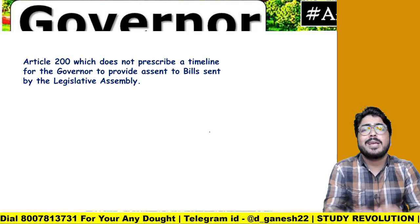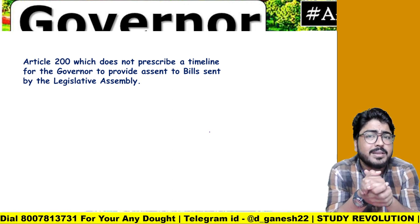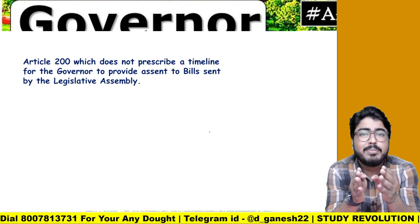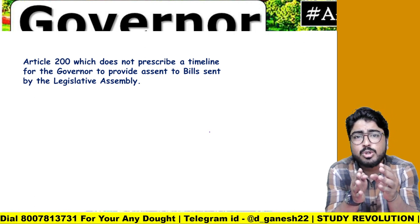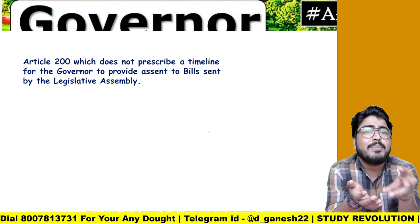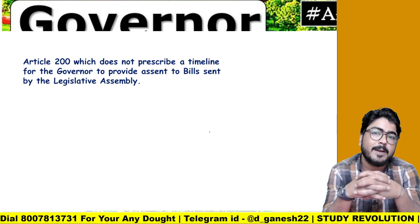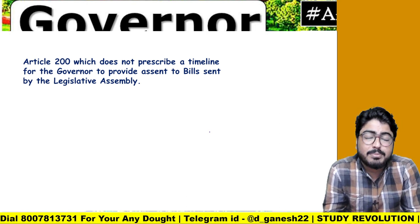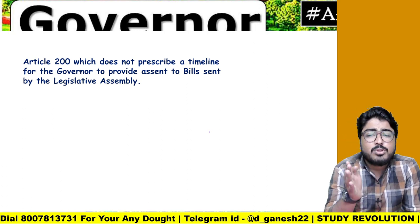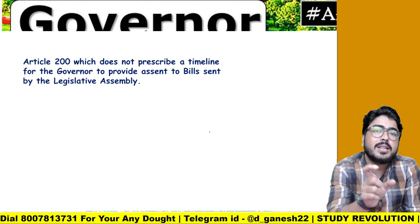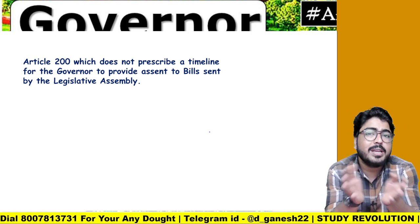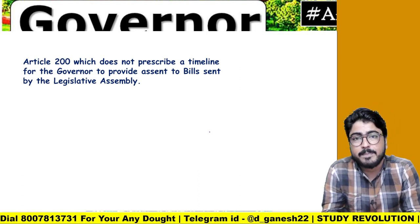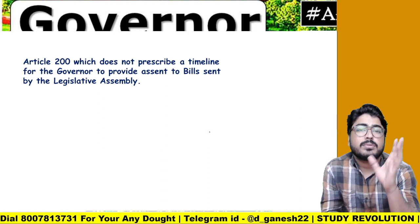In short, in this lecture we tried to understand that the provision given in Article 200 has a loophole — that there is no time limit prescribed for the action the governor must take on a bill sent by the state government. This is the loophole in Article 200 that is cited by state governments. Though the governor does not formally have pocket veto, the governor is effectively enjoying pocket veto because of this loophole — that is the core issue of this lecture.